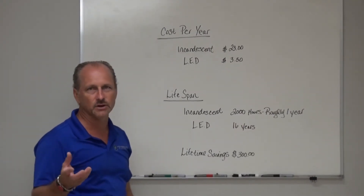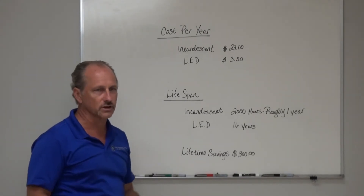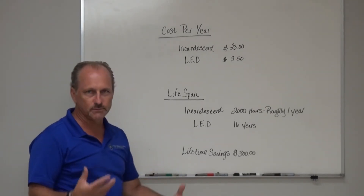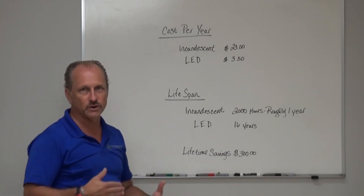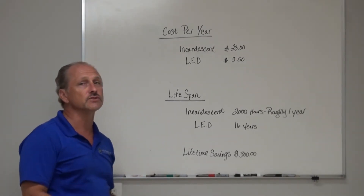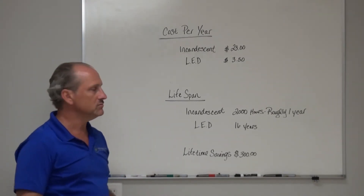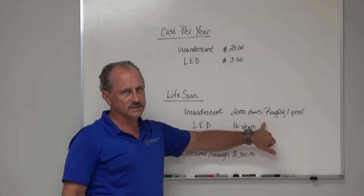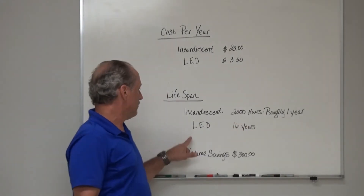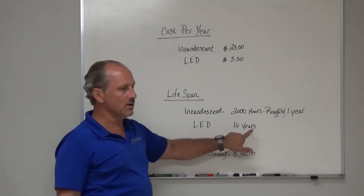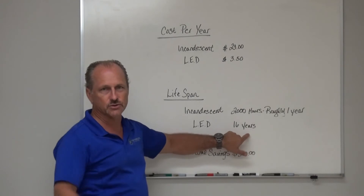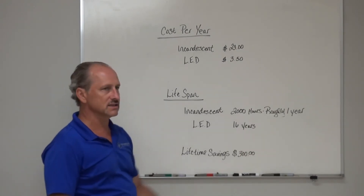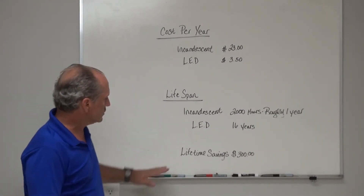Incandescent bulbs don't like to be shaken and don't like big temperature differentials, so if you get two thousand hours, that's pretty good. Based on six hours a day, that's roughly a year. And that LED trim will last about sixteen years.